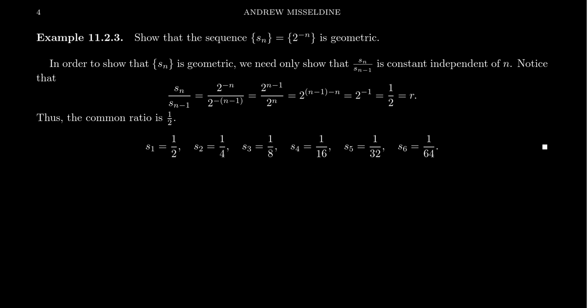This sequence is in fact geometric. To show it's geometric, we must show that consecutive terms have a constant ratio. It doesn't matter what n is, you should always get a constant. If you take s_n over s_(n-1), well s_n is 2^(-n) and s_(n-1) would be 2^(-(n-1)). Because we have negative exponents, we can take reciprocals. This looks like 2^(n-1) on top, 2^n on the bottom.